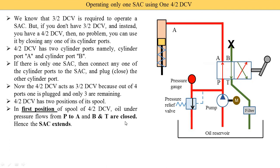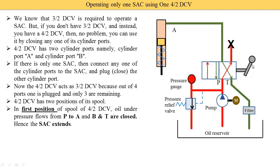Now we understand the second position. Here you see the diagram has changed — you can watch the animation. This is the first position. To achieve the second position, we operate the directional control valve by applying some manual force. You can see the position changing from 1 to 2 and 2 to 1 by operating it with manual force.